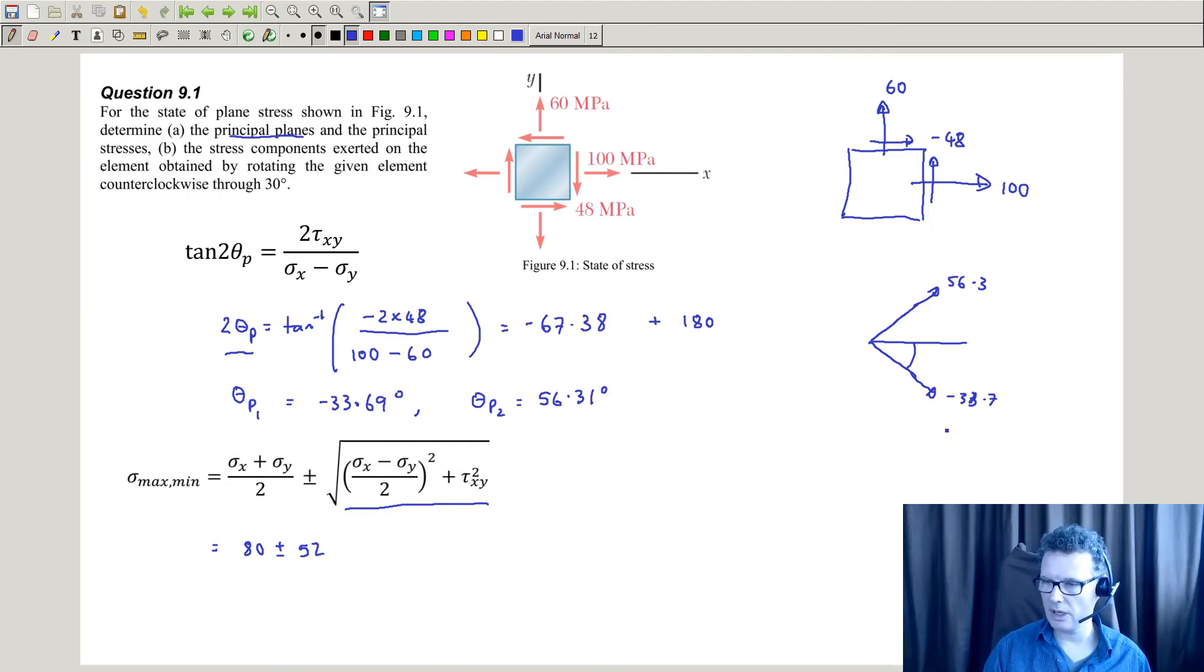So I should have a maximum stress here of 52 plus 80 of 132 megapascals, and here 80 take away 52, another stress of 28. And that looks not quite right looking at those axes there. So let's just check whether that's correct. And what I'm going to do is, it's always good to do a check, take a transformation.